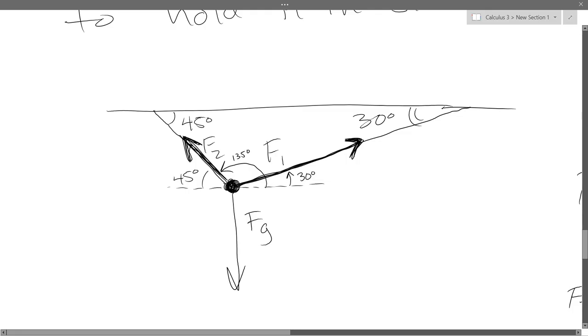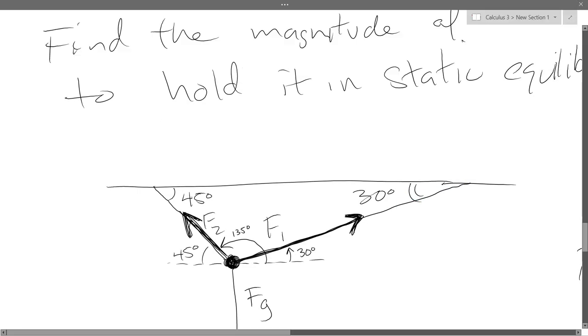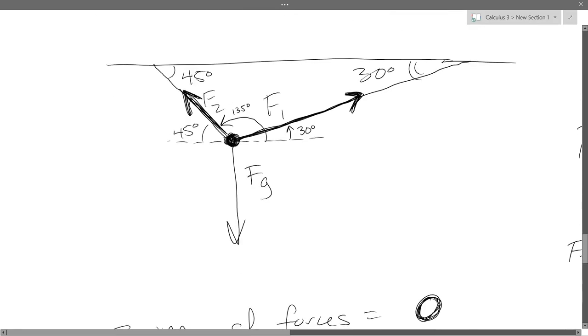So we got force one, force two, and force of gravity. Force of gravity is easy, just all negative y. Force one, we're going to use 30 degrees, the original 30 degrees up in the corner, but we want to measure the right way. Also, our vector doesn't point this direction, so that 30 degree measurement, you want to make sure you have the vector pointing the right way.